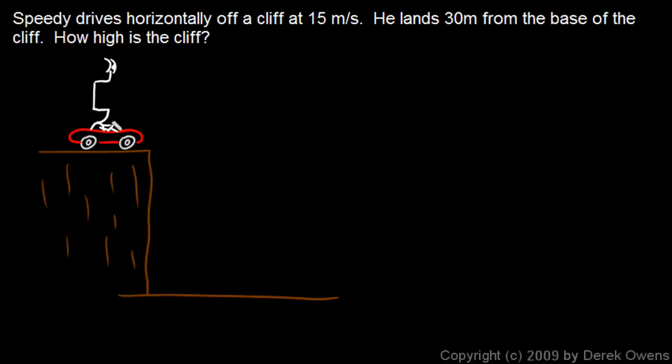So here's Speedy. Speedy has to drive a convertible because he has this huge head, and his hair is blowing back in the wind there. We're given the initial velocity v0, we know it's 15 meters per second and that's horizontal. He leaves the cliff horizontally.